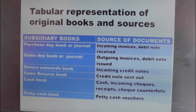The second one is the Sales Day Book or Sales Journal. The source of documents to the Sales Day Book or Sales Journal is outgoing invoices — that is, invoices sent out of the organization — and debit notes issued. All these two can serve as the source of documents to the Sales Day Book or Sales Journal. Then we have the third one, which is the Returns Outwards Book. The source of documents to the Returns Outwards Book is incoming credit notes — and no other source of documents.